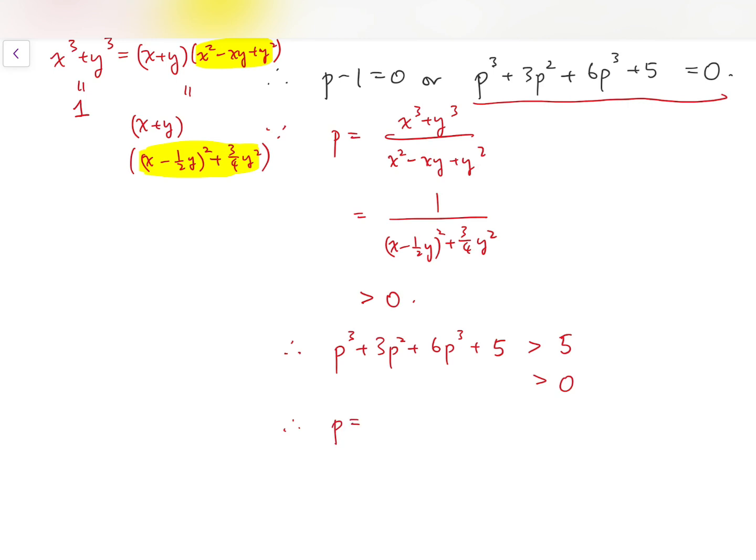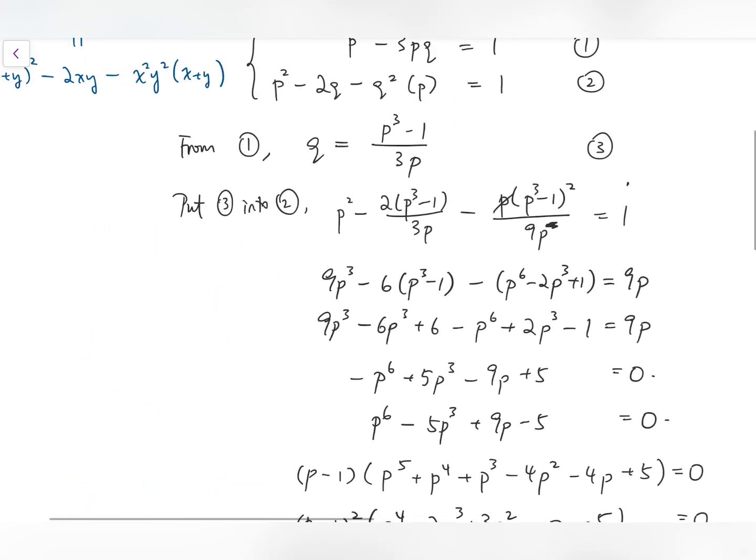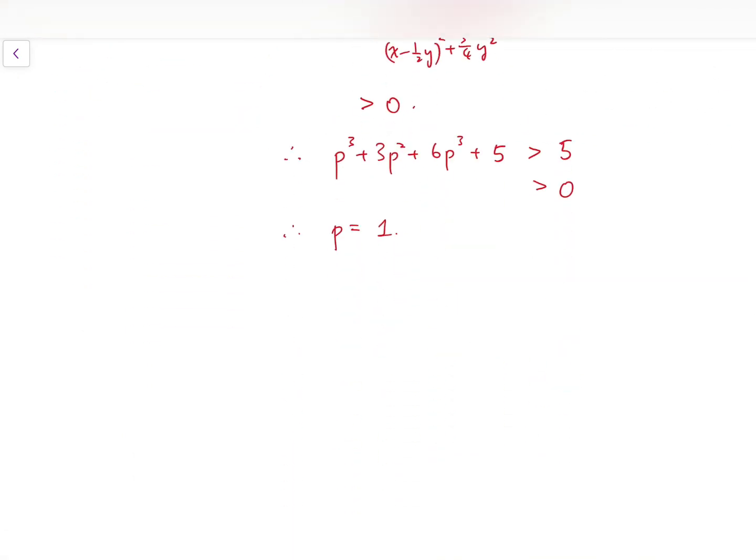So therefore p equals 1. And going back, we can solve q because we have this relation between p and q. Simply putting p equals 1 into this equation, we have q equals 0.